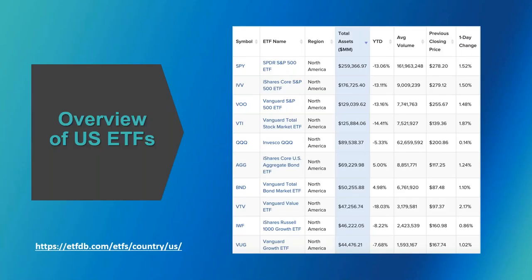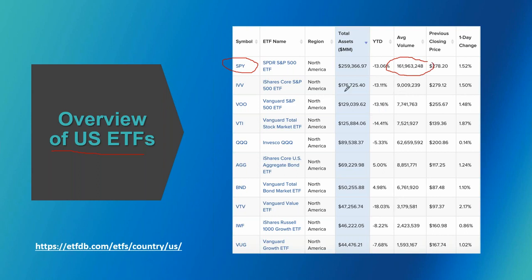Here you have an overview of all the biggest US ETFs with their highest liquidity — for both the stock itself and the options which exist for the SPY. The average volume is 160 million, which is crazy. The second one, also from iShares, is only 9 million. The S&P 500 ETF from BlackRock or iShares is the most famous and has the highest volume you'll ever find in ETF selection.